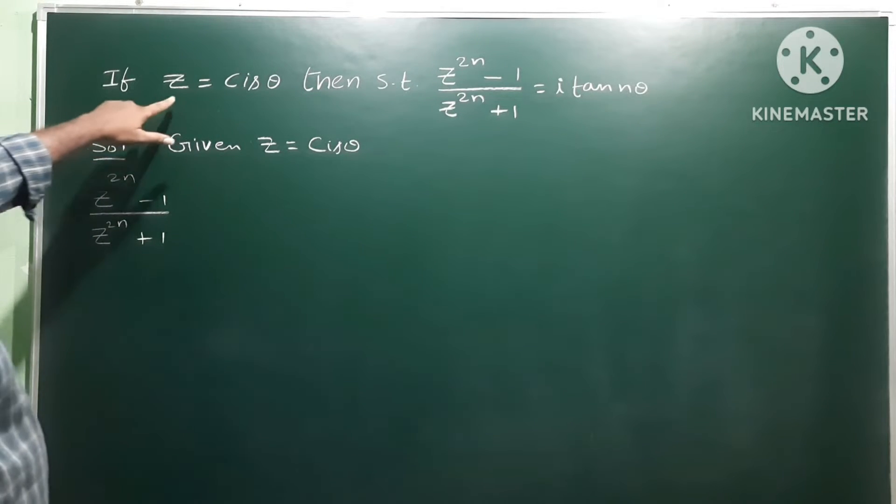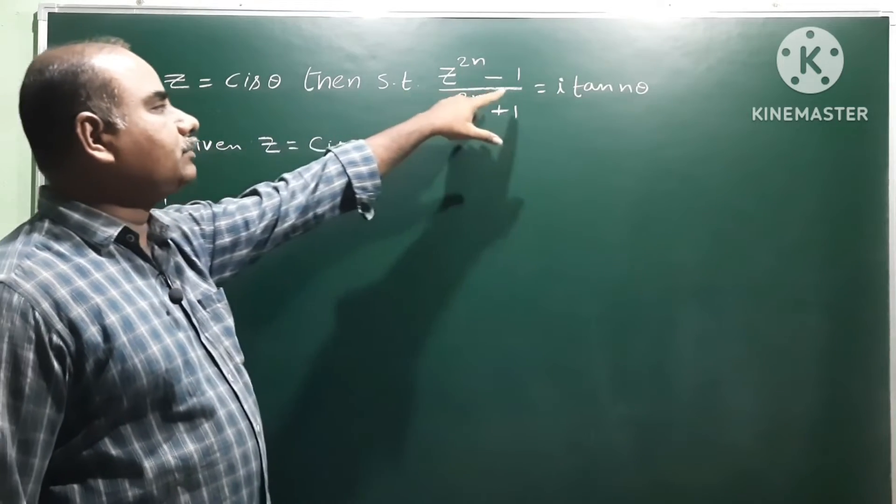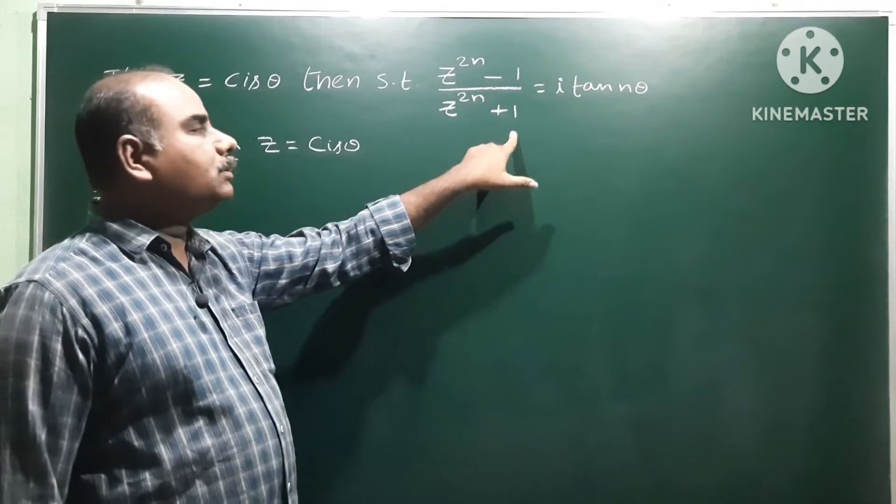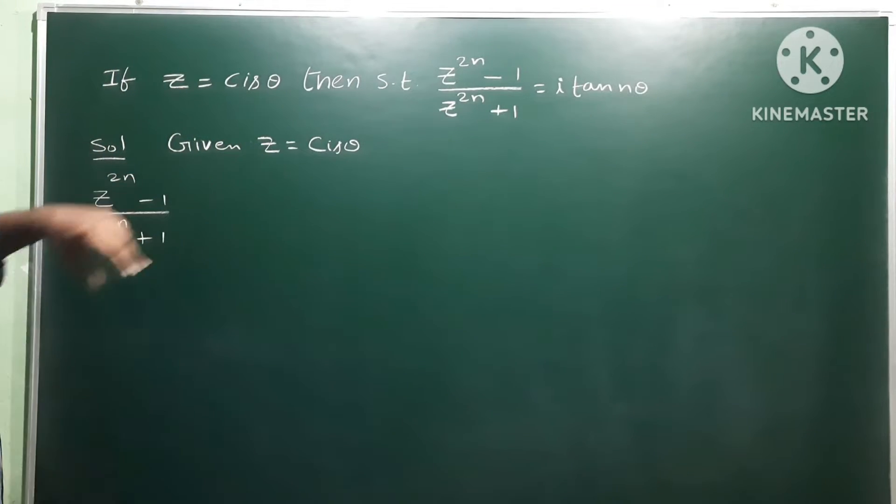The next problem: if z is equal to cis θ, then show that z power 2n minus 1 by z power 2n plus 1 is equal to i tan nθ. We will prove this. Given z is equal to cis θ.